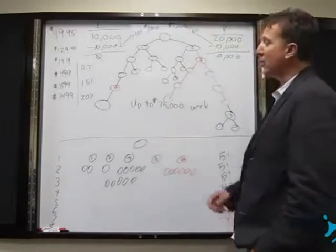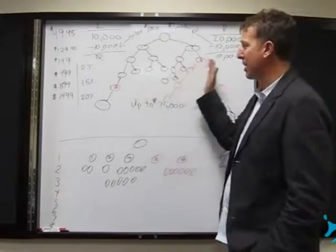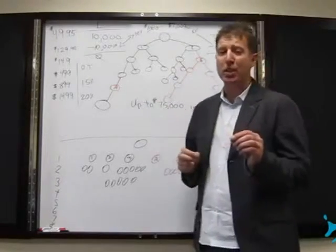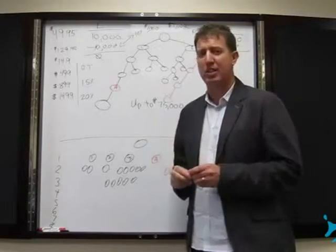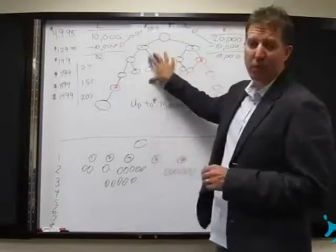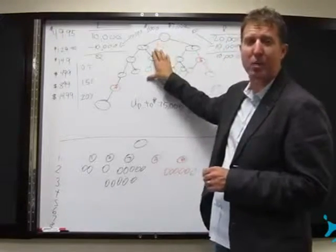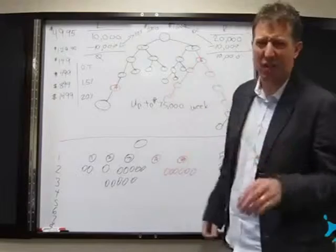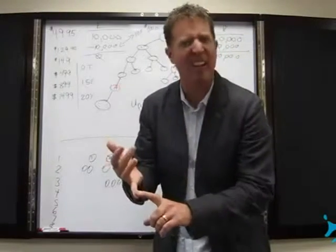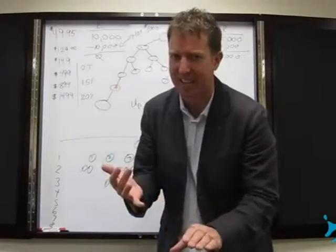So here's how it works. When you first get started at Ocean Avenue and building a team, all of the initial purchases and any purchases in the first two months of their business at Ocean Avenue, the volume from those packs is coded to go into this front-end binary. I love this. If you've ever heard complaints about binaries, it's typically two things. Number one, I got stuck on a strong leg, I can't stand it. Number two, you only get paid on the weak leg.